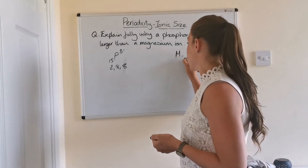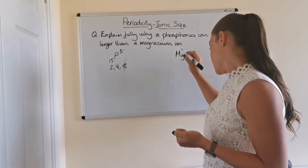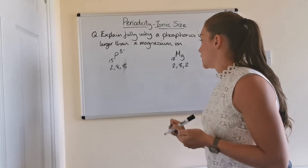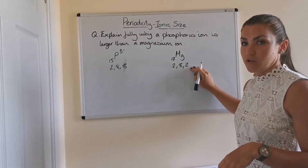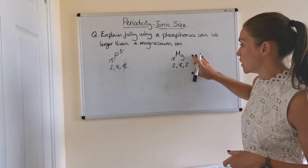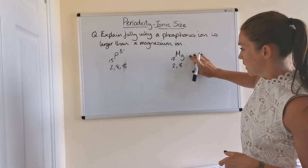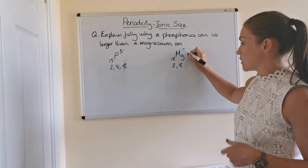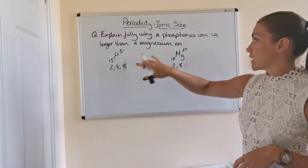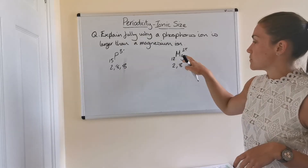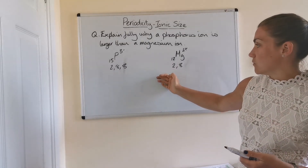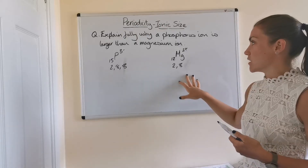Looking at magnesium — it's got atomic number 12, and its electron arrangement is 2,8,2. To fill that outer shell it would need to gain 6 electrons, but that involves more electrons than simply losing the 2, so it loses its 2 outer electrons to become 2,8, giving it a 2 positive charge. By working out what each element exists as when it forms an ion, we've shown ourselves why the phosphorus ion is bigger than the magnesium ion.